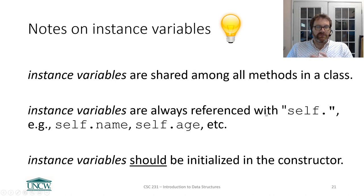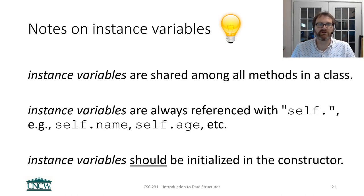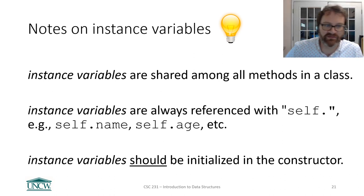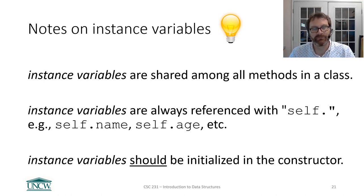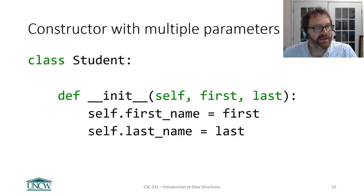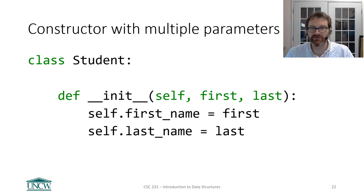A couple of big important things to remember about class instance variables. Instance variables are shared among all methods in the class — any method can access an instance variable using 'self.'. Instance variables are always referenced with 'self.' when you're inside the class. And your instance variables should be initialized in the constructor — technically they don't have to be, but it's best practice.